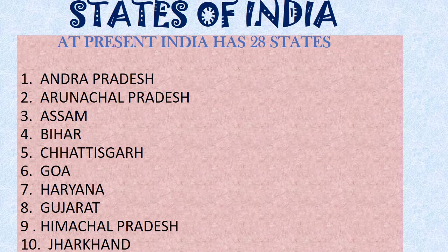With pictures, you can learn the states as well as capitals and languages. Once again: Andhra Pradesh, Arunachal Pradesh, Assam, Bihar, Chhattisgarh, Goa - G-O-A - Haryana, Gujarat, Himachal Pradesh, Jharkhand. Learn the spellings also - go through the book.